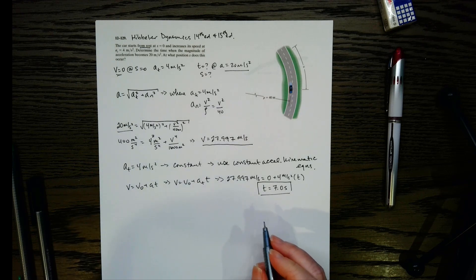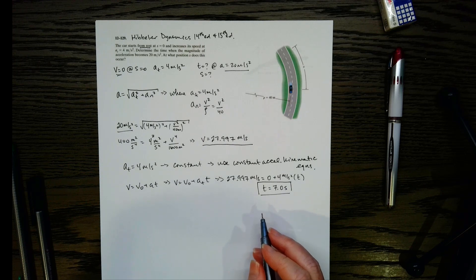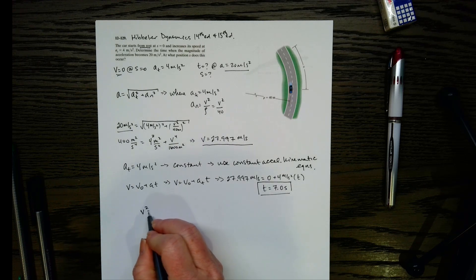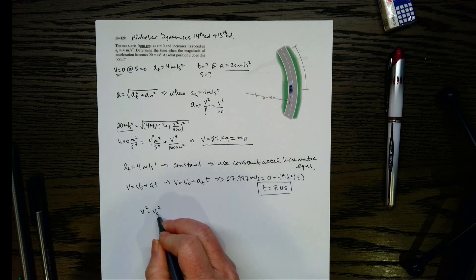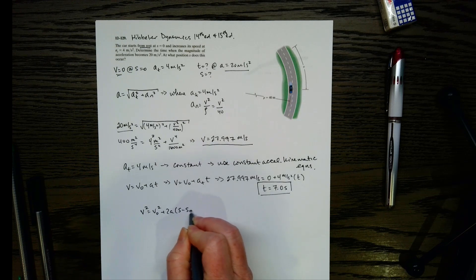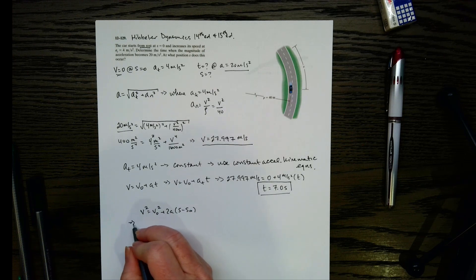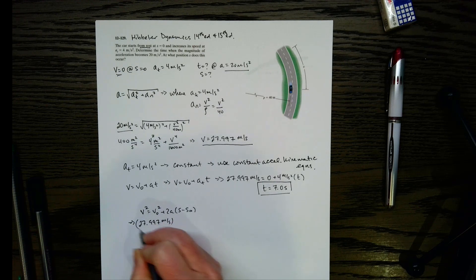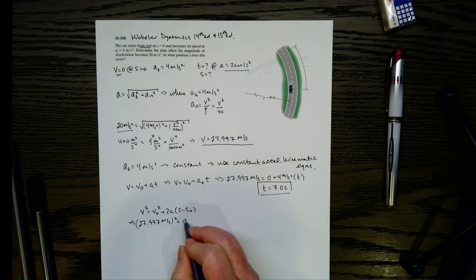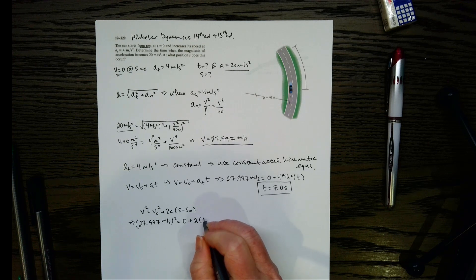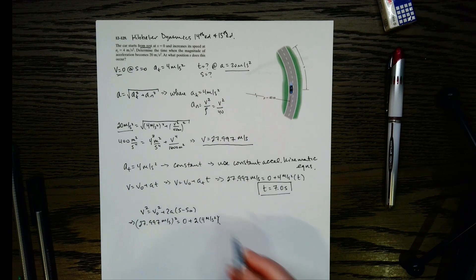And then now we need s. How can we find s? Let's look at another kinematic equation. So I chose this one: v squared equals v naught squared plus 2a times the change in displacement. So now if we look, let's plug in our values. Final velocity, 27.997 squared. That equals the initial velocity, which was 0, plus 2 times a. a is the a sub t, so 4 meters per second squared.